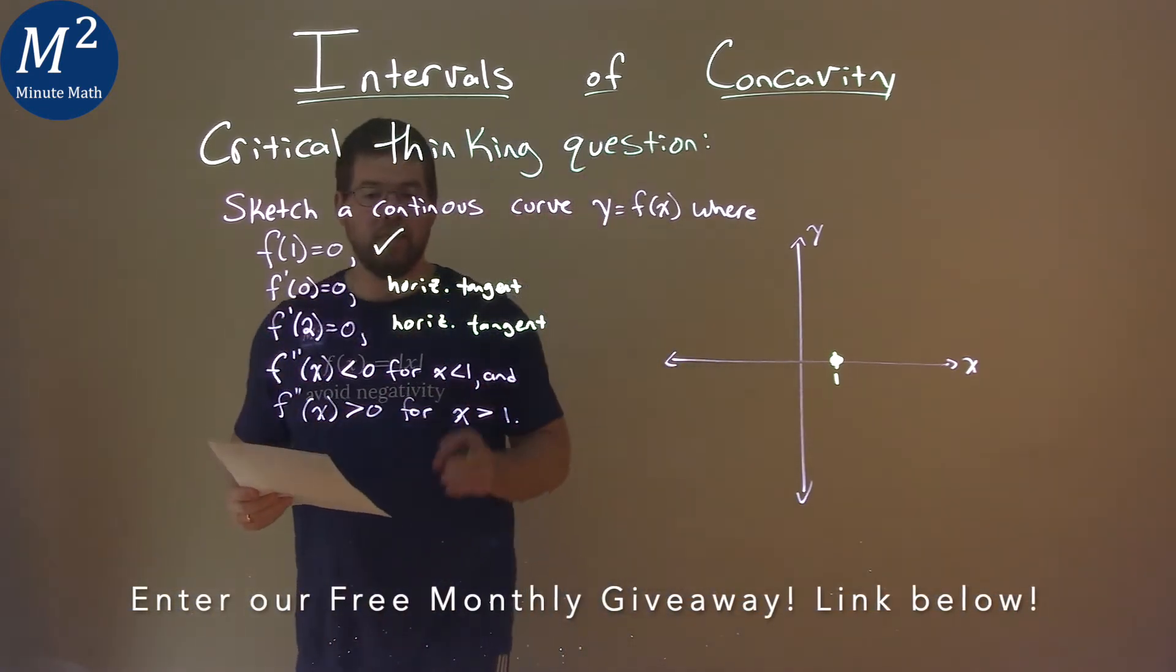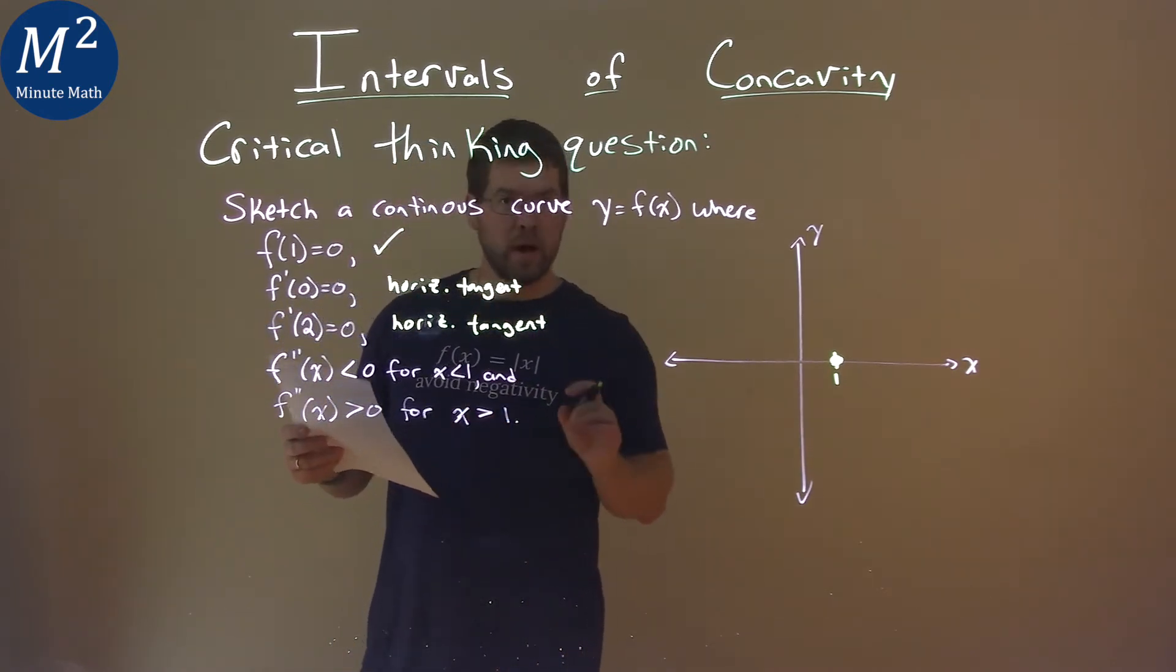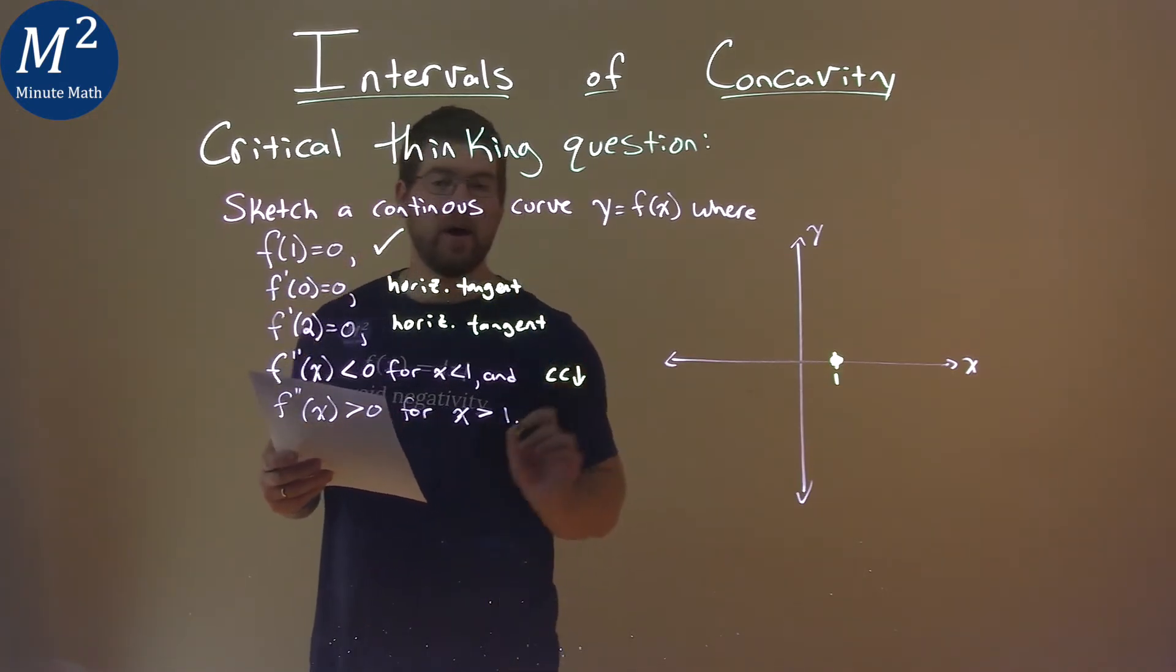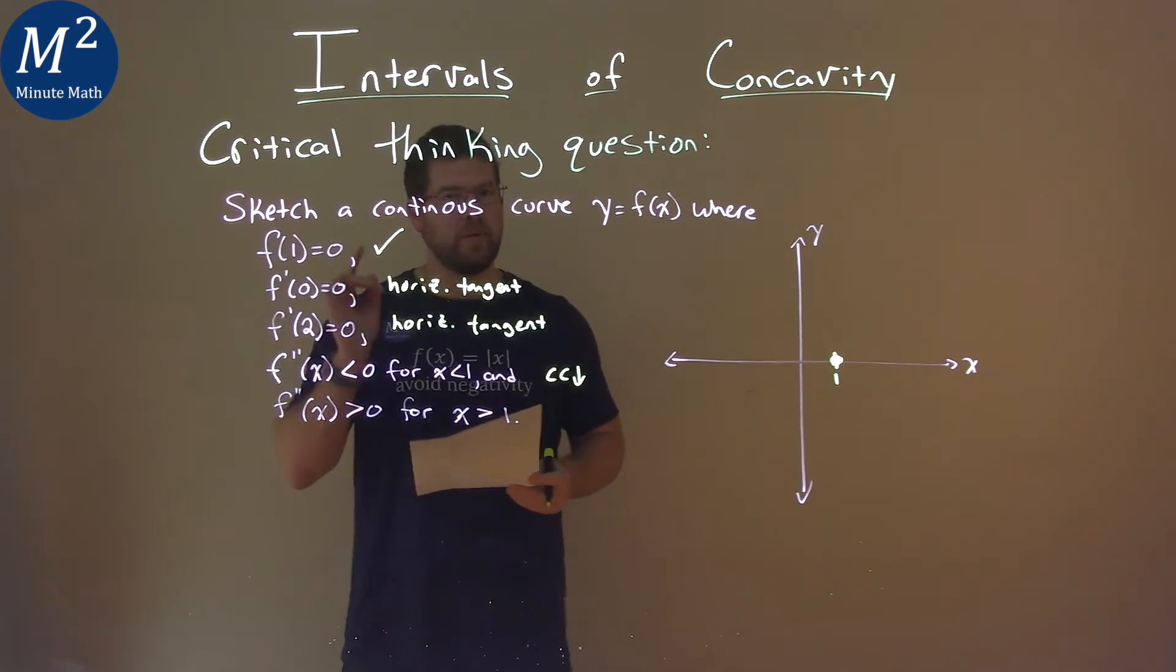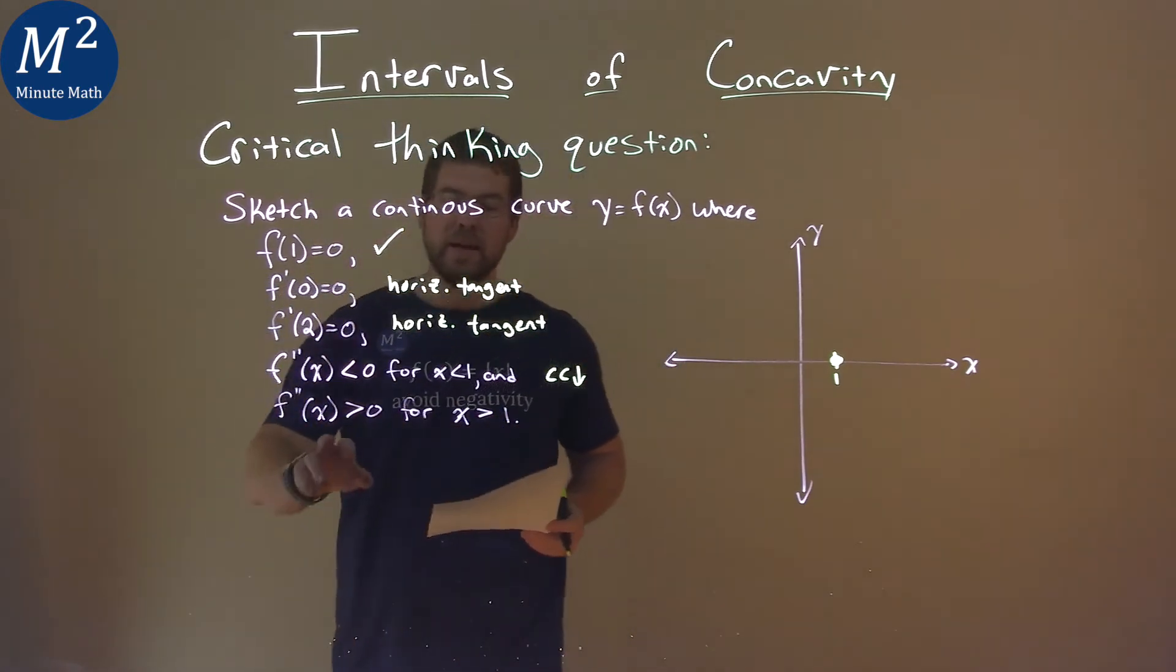Now they tell us also that f double prime of x is less than 0 for when x is less than 1. And that tells me that we are concave down in that interval. Remember the second derivative test. If it's less than 0 on an interval, we're concave down.